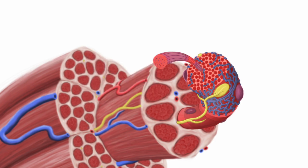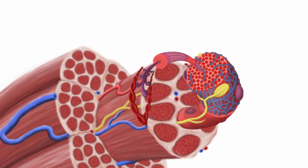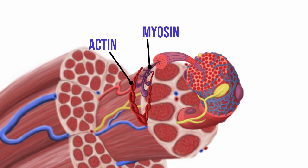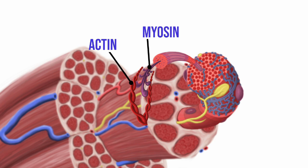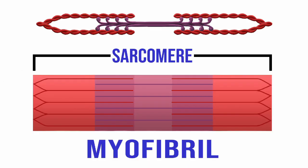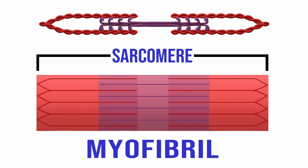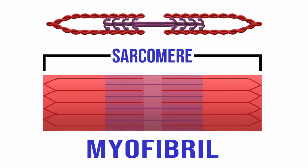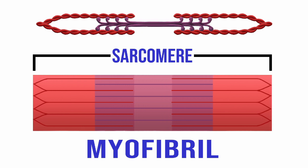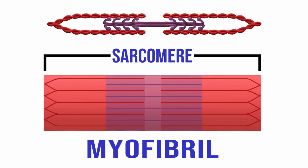Inside a myofibril is where the magic happens. When a muscle is contracted the sarcoplasmic reticulum floods the cell with calcium ions that activate the proteins actin and myosin. These are the actual proteins that contract the muscle. After doing this process to the point of exhaustion your muscles become depleted and damaged.